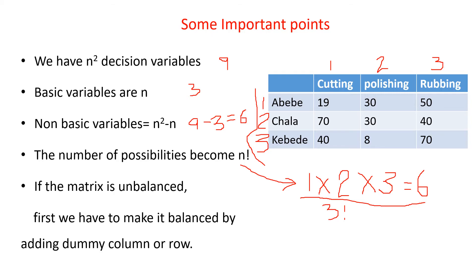If we encounter an unbalanced matrix in the assignment problem, the first task is to make it balanced by adding a dummy column or dummy row — just as we did in the transportation problem. We make the cost of the dummy entries zero, because in reality there is no actual assignment from those dummy rows or columns.